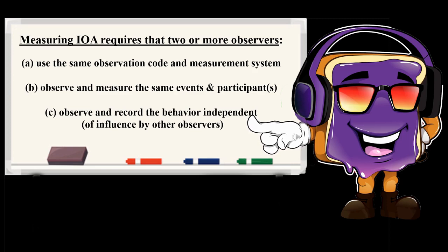Measuring IOA requires that two or more observers use the same observation code and measurement system, observe and measure the same events and participants, and lastly observe and record the behavior independent of influence by others.